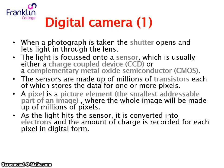The sensor is made up of millions of transistors, each of which stores the data for one or more pixels. A pixel is the smallest addressable area of an image. Bitmap images are made up of lots of pixels — a grid of pixels. In terms of a digital camera these days, a whole image will be made up of millions of pixels.